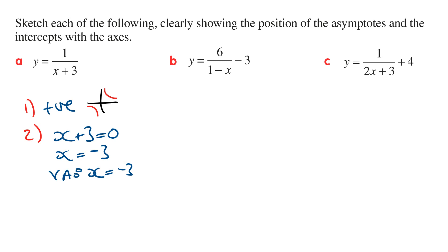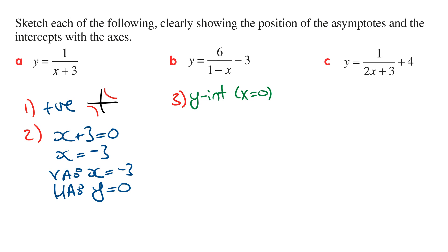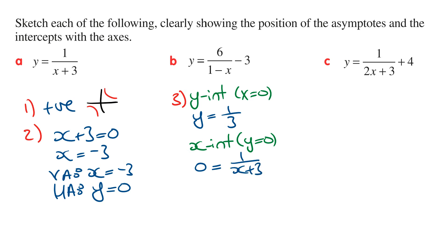The horizontal asymptote is the constant that's added to the fraction part of the function. For part A there's no constant added, so the horizontal asymptote is just the line y is equal to 0. Next, we need to work out the x and y intercepts. To work out the y intercept, we let x equal 0, giving y is equal to 1 on 3, so the y intercept is 1 on 3. For the x intercept, we let y equal 0, giving 0 is equal to 1 on x plus 3. Multiplying both sides by x plus 3 gives 0 is equal to 1, which doesn't make sense, so there are no x intercepts. We know this is true because the horizontal asymptote is the line y is equal to 0.